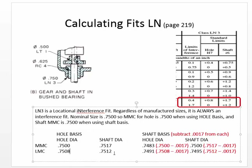Shaft basis can be determined from the hole basis by subtracting whatever value you need to get the shaft maximum material condition size to the nominal size. So we start by putting 7500 in the MMC location for the shaft. In order to get there from the hole sizes, we have to subtract 1.7 thousandths of an inch. If we subtract 1.7 thousandths from one value in the hole basic chart to get another, we have to subtract it from all of the other values as well — minus 1.7 thou across the board.